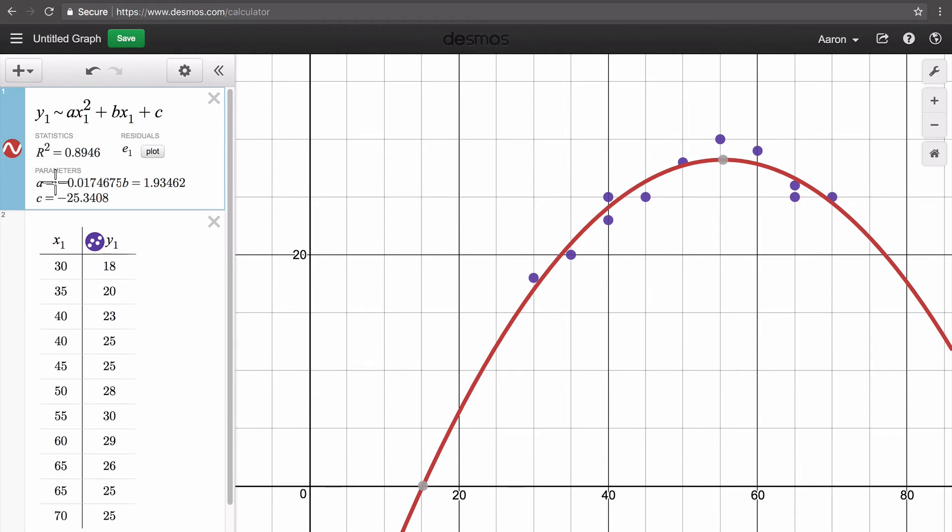You can see that we are given the values of a, b, and c. If we wanted to write our equation, we would just use those as the coefficients for our terms. a is a negative value, and that makes sense because our parabola is opening down. So we should have a negative leading coefficient.